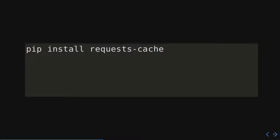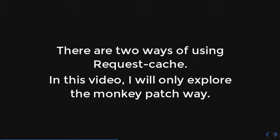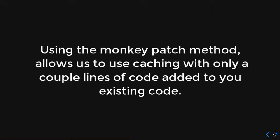Just install it like you would any other Python library. Now to implement it, there are two ways to do it, but in this video we're going to explore just the monkey patch way. The monkey patch method allows us to basically use the requests library as-is without having to change any code. So if you had a script written using the requests library, with this monkey patching system you could just add a few lines of code and your entire program will now be using the requests cache — no need to recode everything.